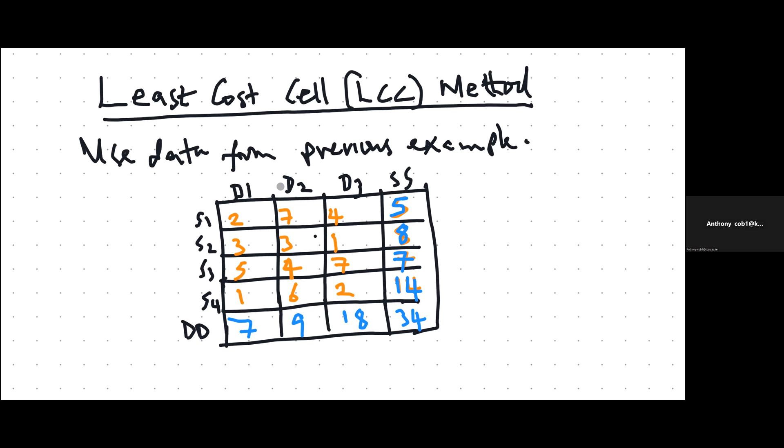In our case, if you look at the cost matrix, that's where the cost matrix ends. Forget about the row totals. From there, you check the least cost. The costs here are 2, 7, 4, 1, 3, 3, 5, 4, 7, 2, 6, and 1. The idea is you allocate first to the cell with the least cost of transportation.